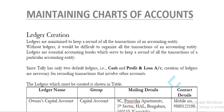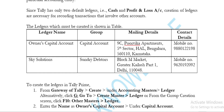TallyPrime has only two default ledgers: the first is Cash and the second is Profit and Loss Account. So we have to create those ledgers which are given in the table. Owner Capital Account — the group name is Capital Account — and Sky Solutions under Sundry Debtors group. Mailing details and contact details are also given in this table.